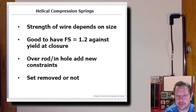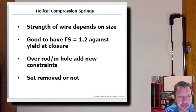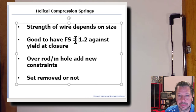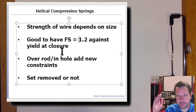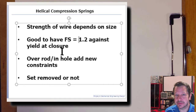Typically stainless costs more than oil quenched and similar materials. The strength of the wire depends on its size, and for high-strength spring materials it's good to have a factor of safety of at least 1.2 against yielding at closure. Closure is when all the coils are compressed down and touching — the spring is coil-bound and can't get any shorter.